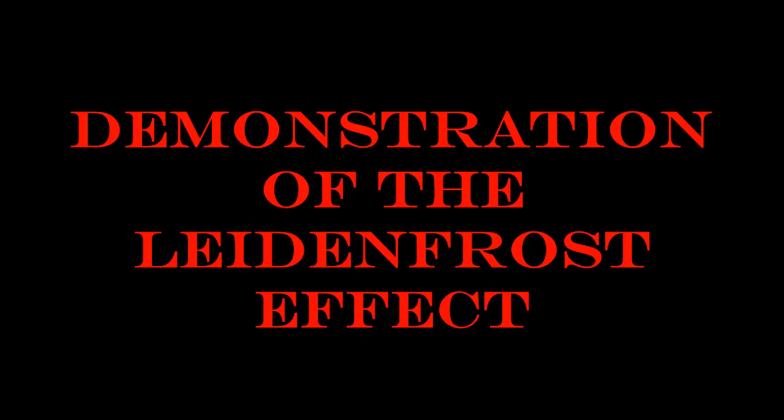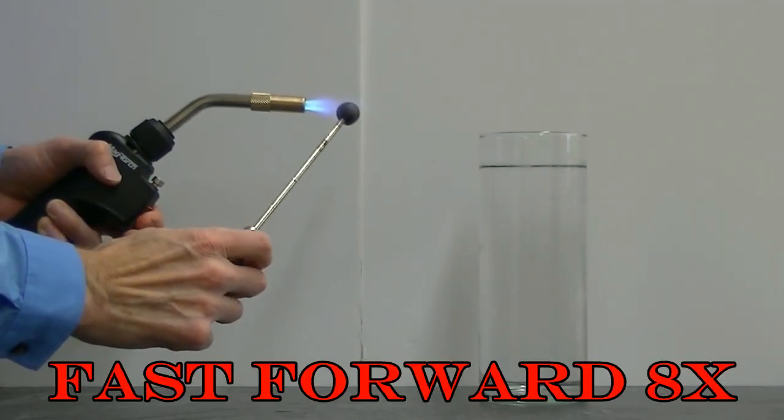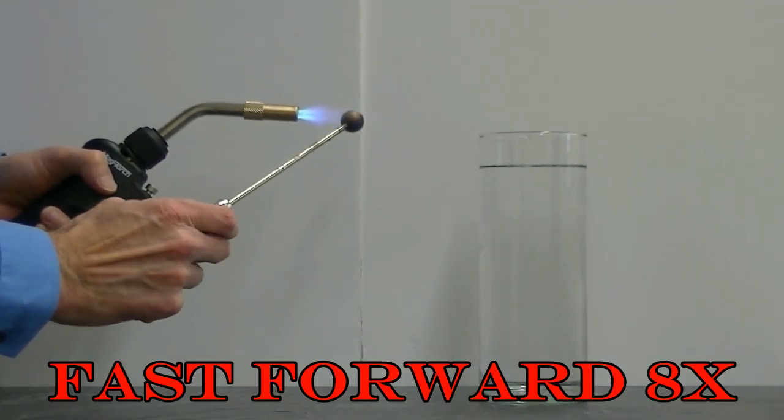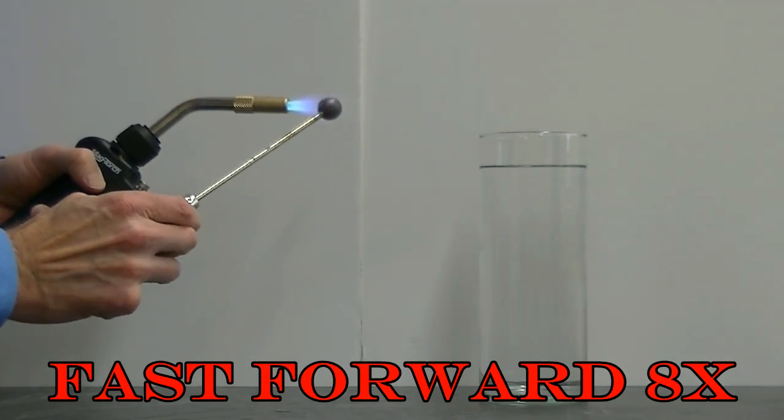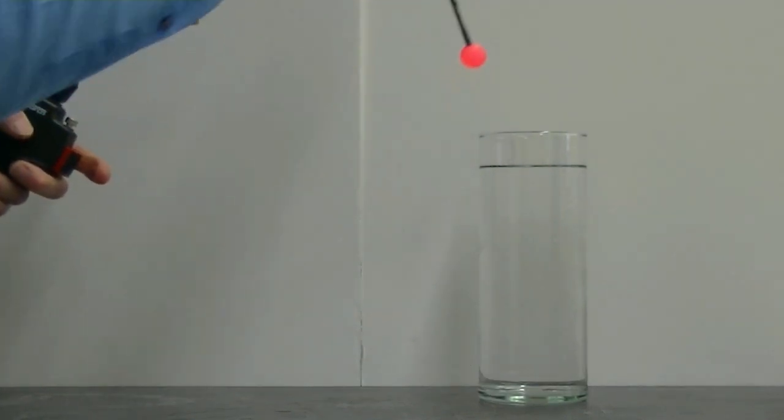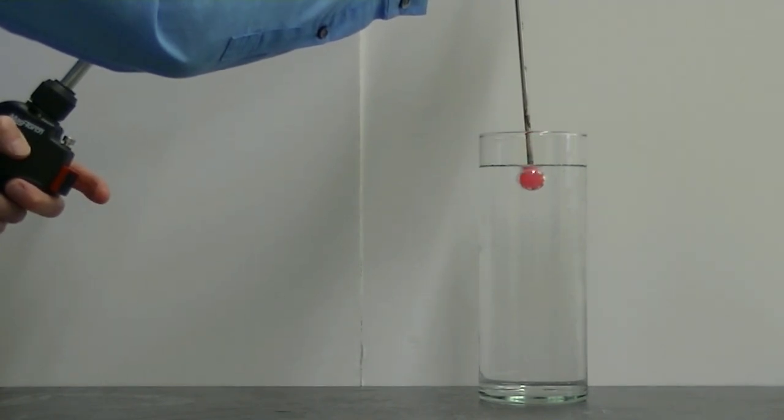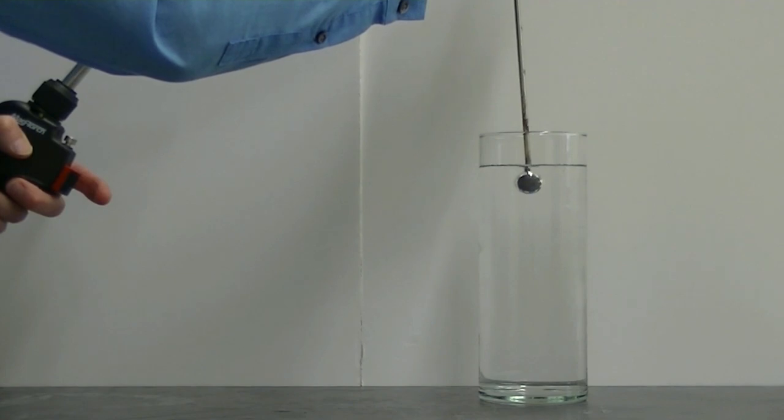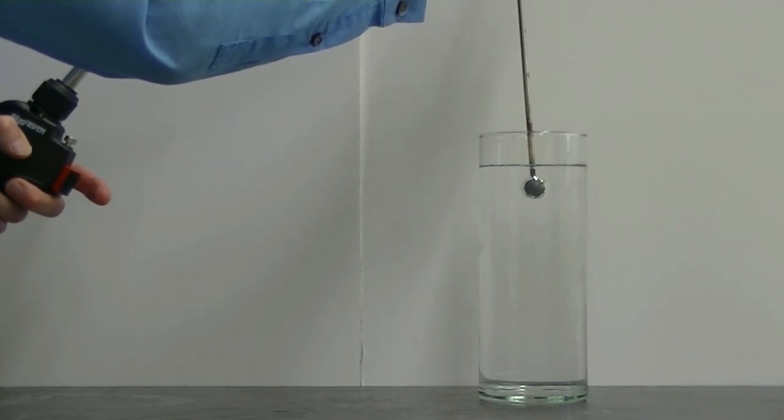Now let's heat the sphere until it glows orange hot and try the experiment again. Well, that's curious. In this case, the steel sphere is hotter, but it hasn't yet caused the water to boil. If you look closely, you'll see a layer of gas that surrounds the steel sphere. That's insulating the sphere from the water.